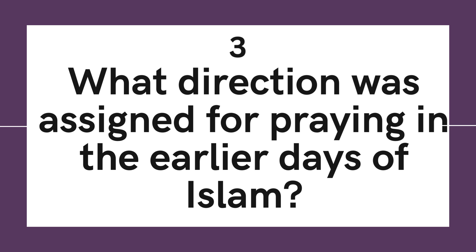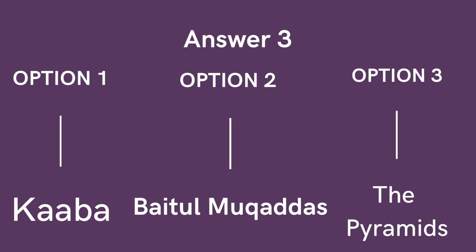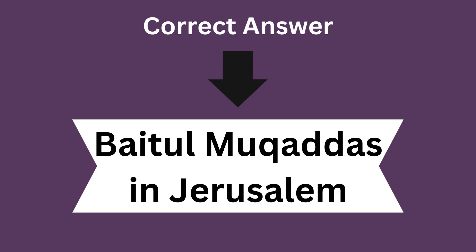Question 3: What direction was assigned for praying in the earlier days of Islam? Option 1: Kaaba. Option 2: Betul Muqaddas. Option 3: The Pyramids. And the correct answer is Betul Muqaddas, that is located in Jerusalem.